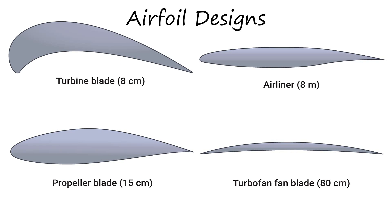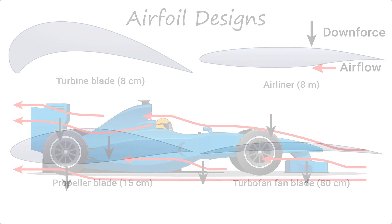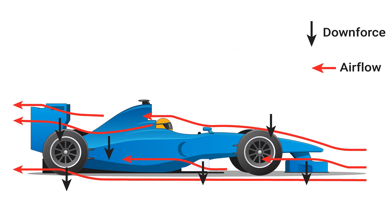Formula One cars want to generate lift in order to press the car onto the road so that the car can travel around corners faster.